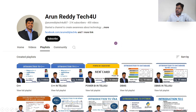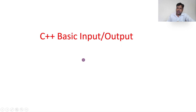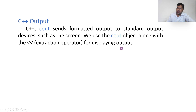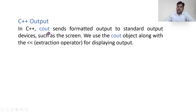So let us move to our topic: C++ basic input and output. Let us first start with the output. In C++, cout sends formatted output to the standard output device such as the screen.